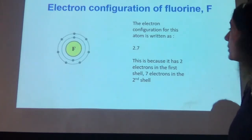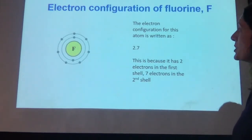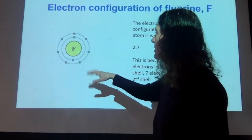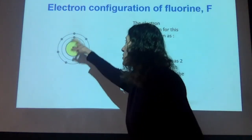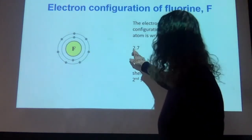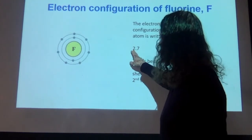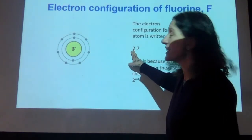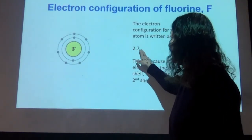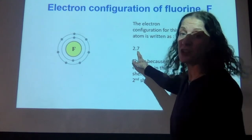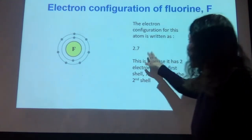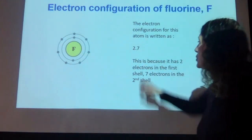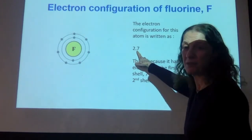Looking at a fluorine atom — fluorine has nine electrons in total. Two electrons go in the first shell, and that means if it's got nine in total, it has to have seven in its outer shell. We write that as an electron configuration of 2.7.